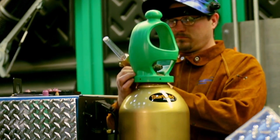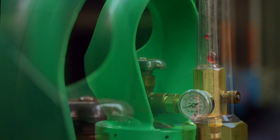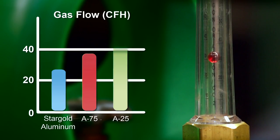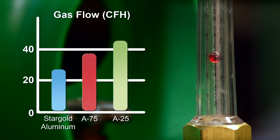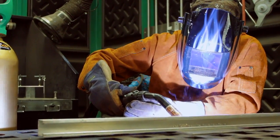Being an argon-based shielding gas, Stargold Aluminum can be used at lower gas flow rates than argon-helium blends while achieving similar performance. Lower gas consumption means fewer cylinders are needed and less cylinder handling is required.